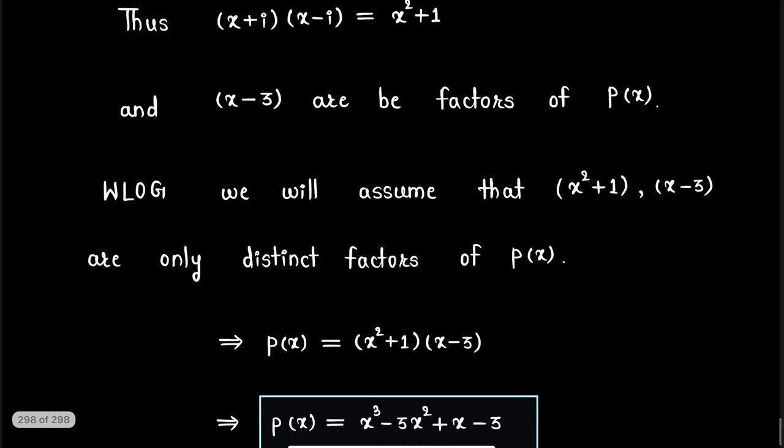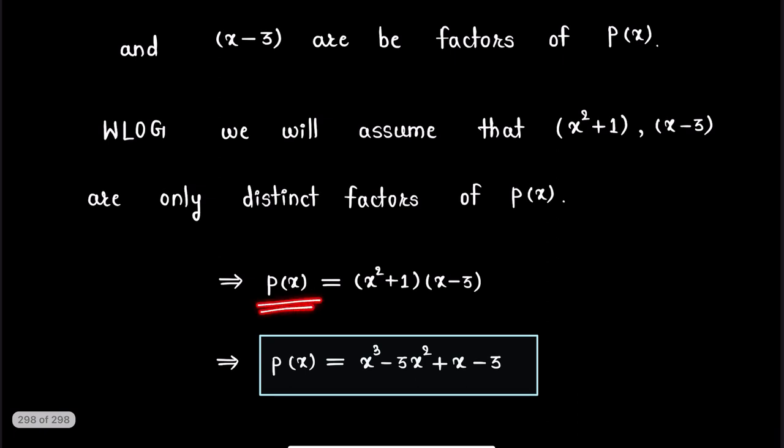So we have polynomial P(x) will be the product of these two factors: (x²+1) and (x-3). And thus, P(x) = x³ - 3x² + x - 3.